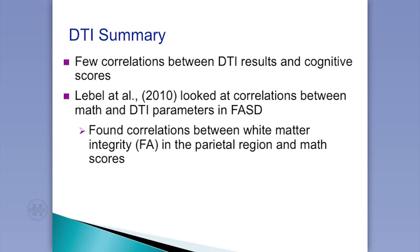We know certain areas of the brain are involved in specific skills — for math, there are areas in the right hemisphere parietal region. In typical populations, the intraparietal sulcus is known to be involved in math. So we looked at the tracks coming in and out of that specific area, and sure enough, the integrity of those tracks was significantly correlated with math difficulties in our FASD sample. That's a direct correlation between brain function and cognitive function — direct evidence linking what we measure back to actual brain damage.